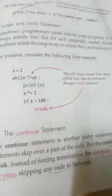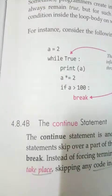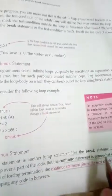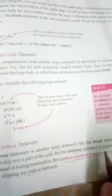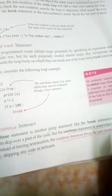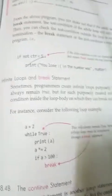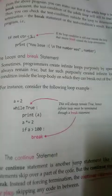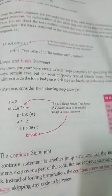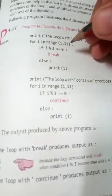The next jump statement is the continue statement. Like the break statement, continue also skips over part of the code, but it is different — instead of forcing termination, the continue statement forces the next iteration of the loop to take place, skipping any code in between. So continue is used to skip to the next iteration, while break is used to totally come out from the while or for loop.